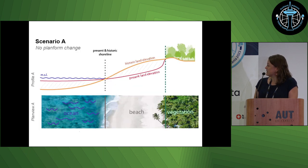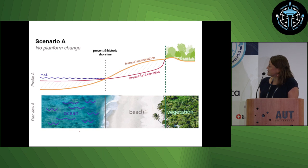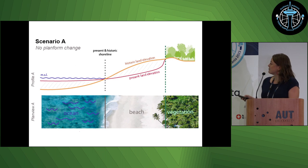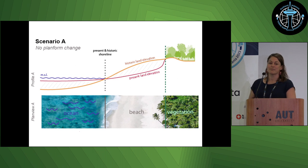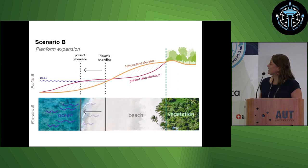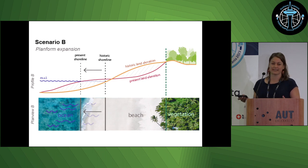Why 3D? Here's an example. In this scenario there's no change — the shoreline is still here and the vegetation hasn't changed — but when you look at it in profile, there's a lot of shift. The sand has shifted from the ocean side, but you can't really see that change in 2D. In another scenario, the sand has moved outward, but it's really just a shift — the sand was here and moved over here — and you can't see it in 2D.